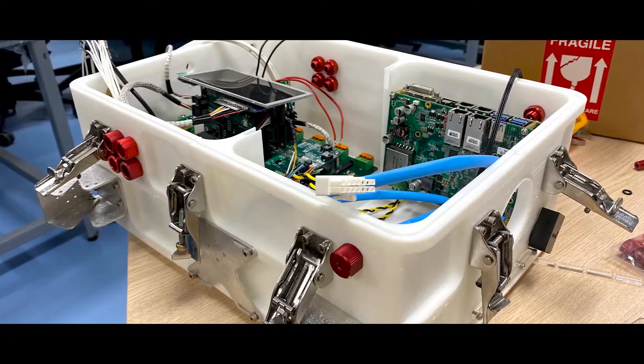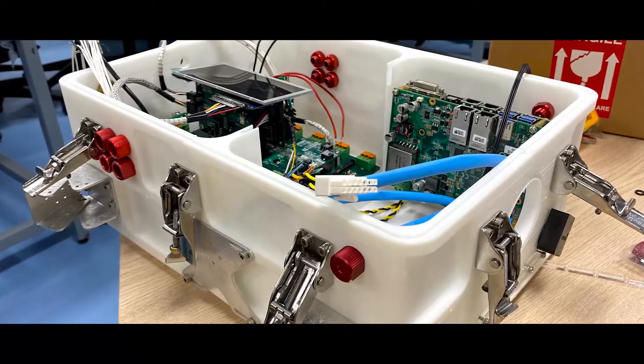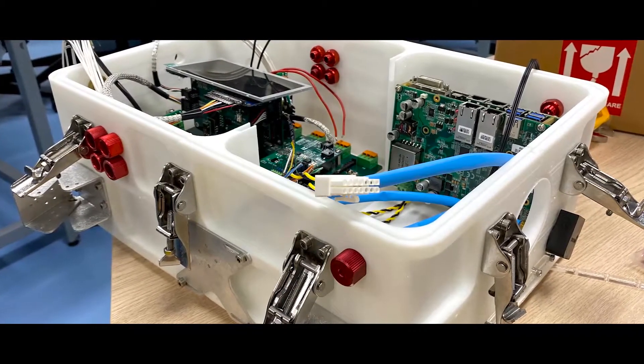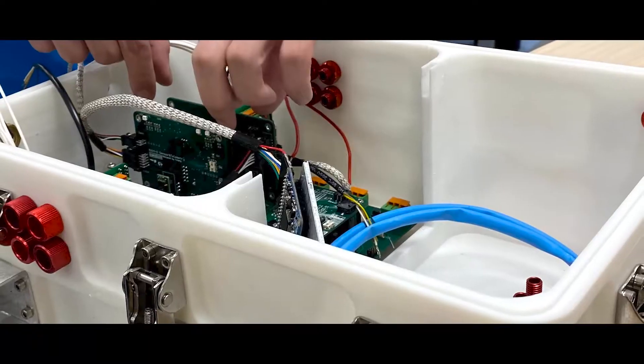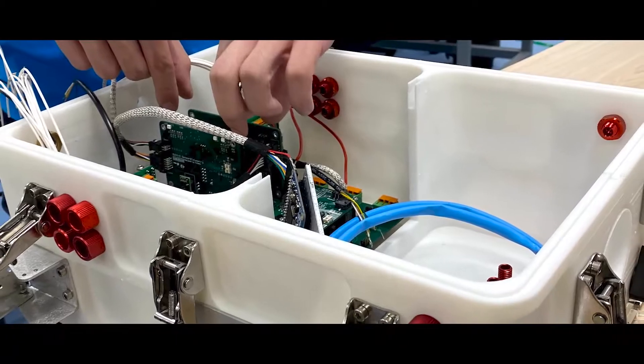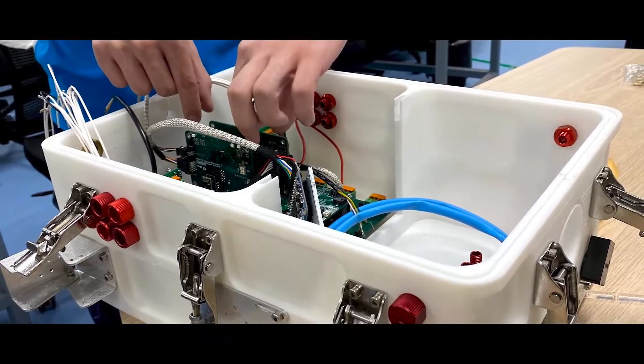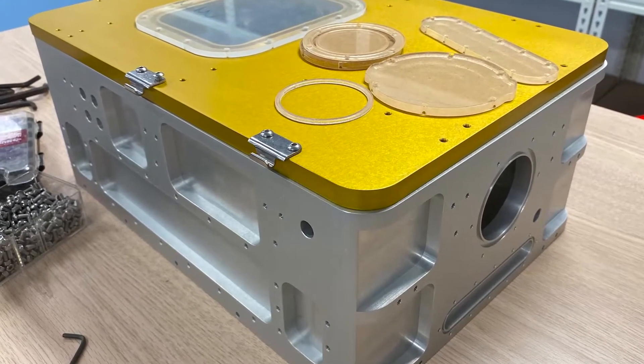Instead of immediately sending our finalized design for CNC fabrication, we decided to prototype our main hull using 3D printing. This allowed us to obtain a scale model of our main hull within a short period of time, with minimum cost incurred. This model allowed for us to test fit the cables and connectors and figure out any underlying issues with the hull design. Once the model was determined to be accurate and suitable for our usage, we sent our design for aluminum CNC milling.